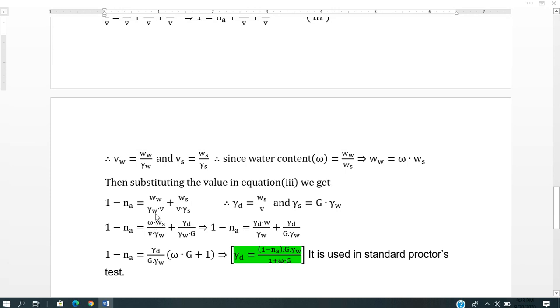So 1 minus Na equals gamma d times water content divided by specific weight of water, plus gamma d divided by specific gravity times specific weight of water.